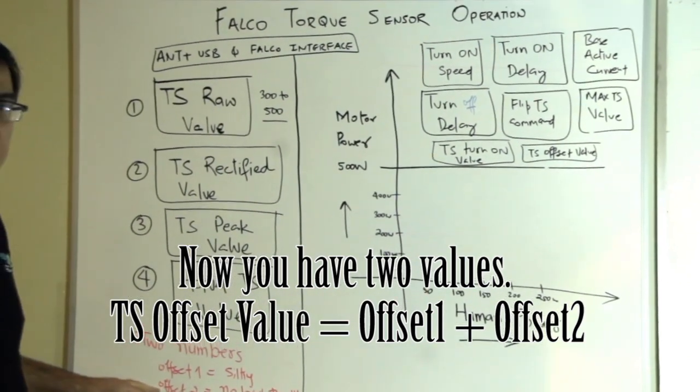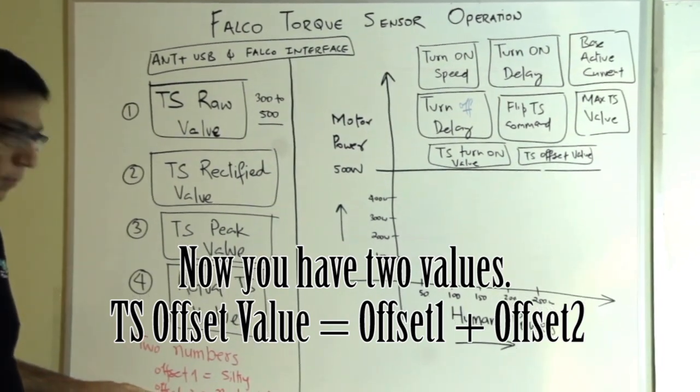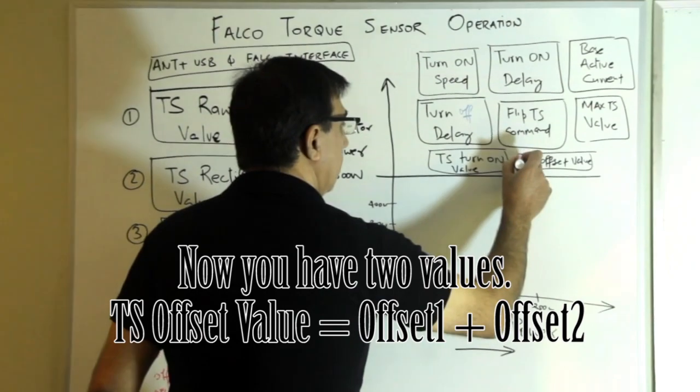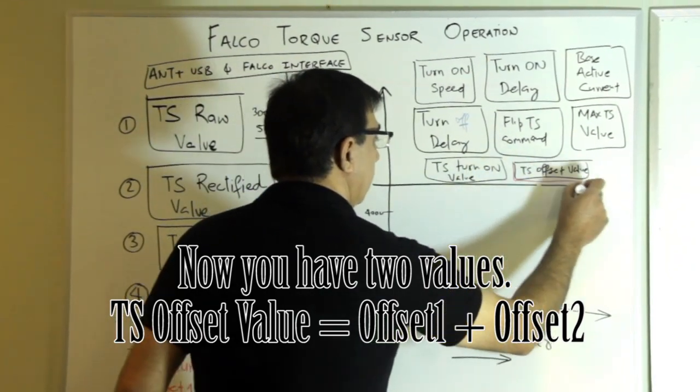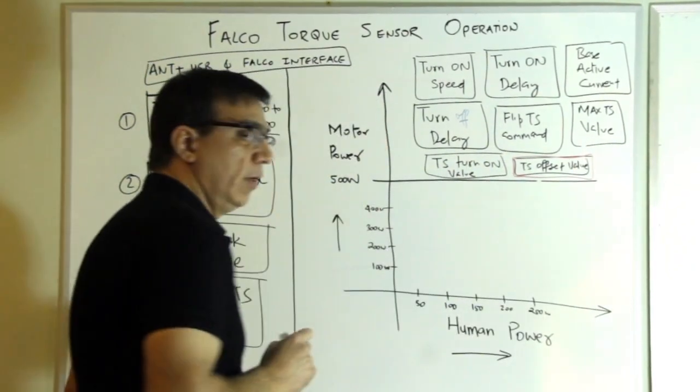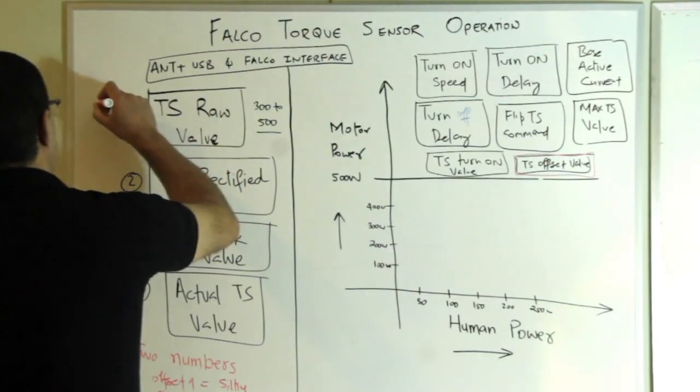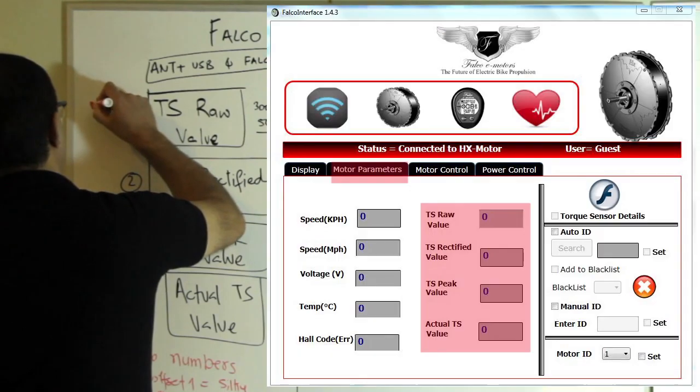So with these two numbers, these two numbers go into this parameter value here, which is also in the Falco interface. And these are under the tab for control.